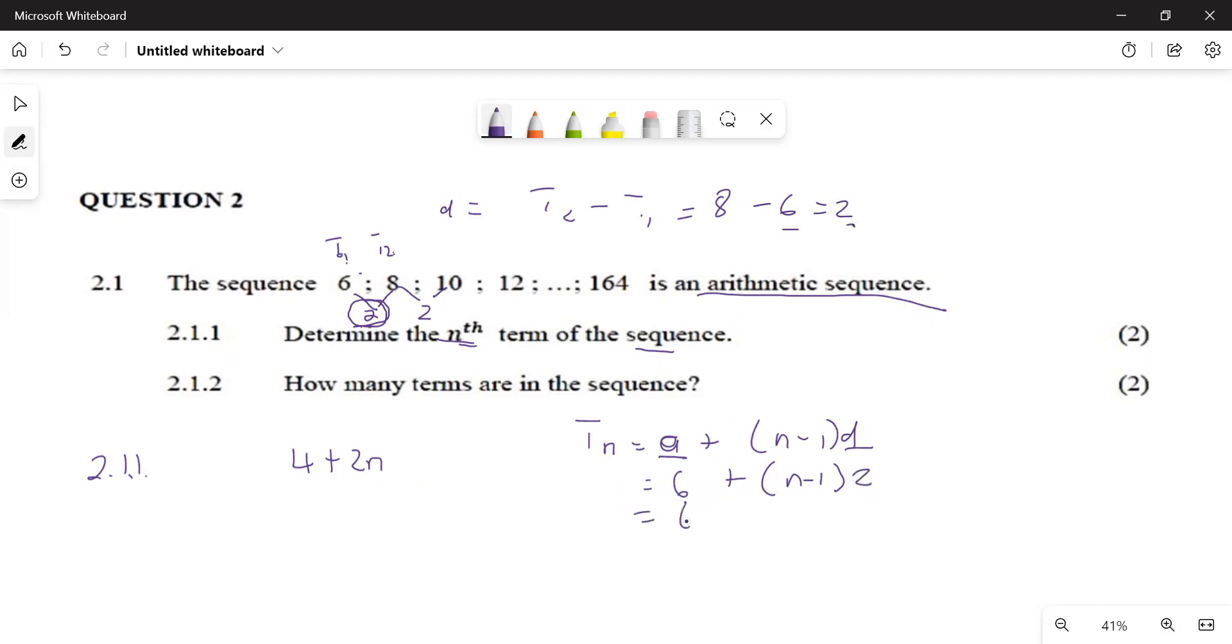This thing here is going to be given as 6 plus, you remove the bracket by saying this one multiplied by this one gives us 2n. And this one multiplied by this one gives us minus 2. They are like terms here, it's 6 and minus 2. Which 2n is going to be equal to plus 4, which is what we got.